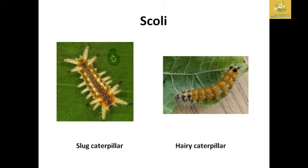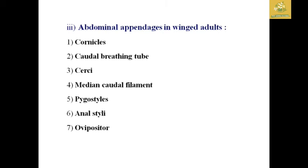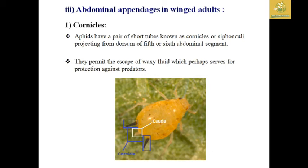The abdominal appendages in winged adults include cornicles, caudal breathing tubes, cerci, median caudal filament, pygostyli, anal styli, and ovipositor. Cornicles are found in aphids — a pair of short tubes projecting from the dorsum of the fifth or sixth abdominal segment. They permit escape of wax fluid that serves as protection from predators.